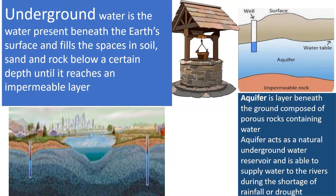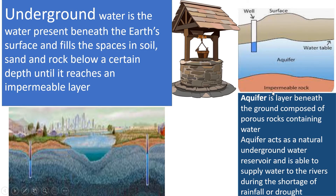Underground water is the water present beneath the Earth's surface and fills the spaces in soil, sand and rock below a certain depth until it reaches an impermeable layer. An aquifer is a layer beneath the ground composed of porous rocks containing water.